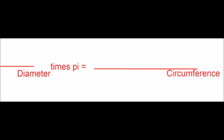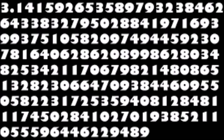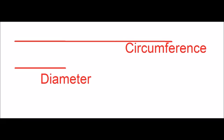Pi is the exact number of diameters it would take to equal one circumference. And because it is an exact value, it is not rounded. Think of it like three and a half diameters, except it is actually 3.14159265358979323846264 and so on diameters in reality.